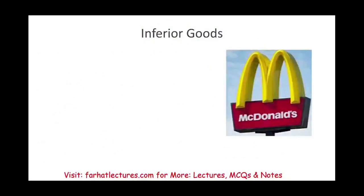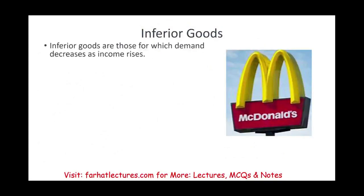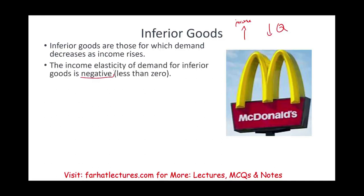Now let's talk about inferior goods. Inferior goods are those for which demand decreases as income increases — so as your income goes up, your demand for that product goes down. The income elasticity is negative, less than zero. An example would be a low-cost product. My classic example from my econ professor, Dr. Bajwa: as you make more money, you're going to be buying more steaks and lobsters and eating less at McDonald's.